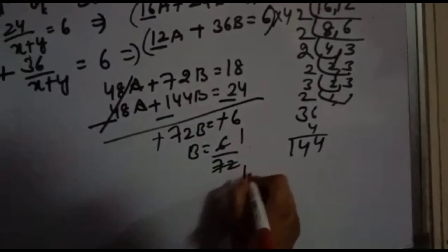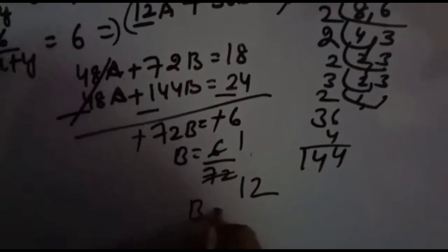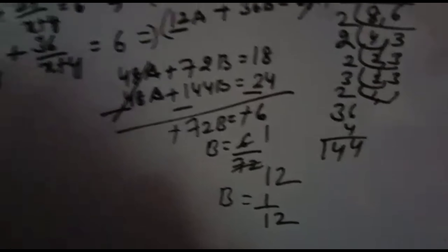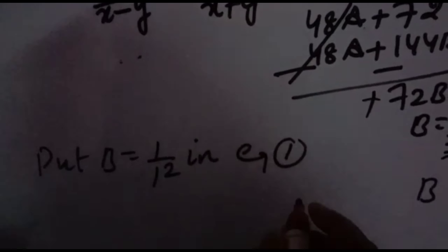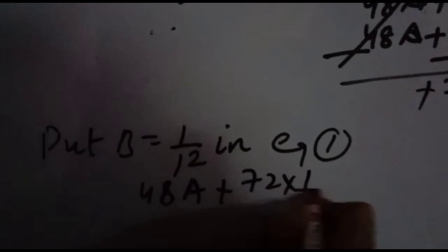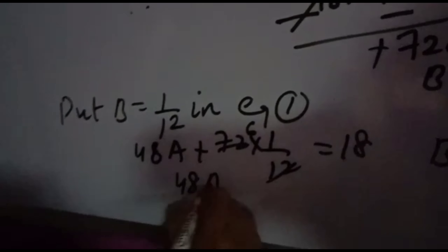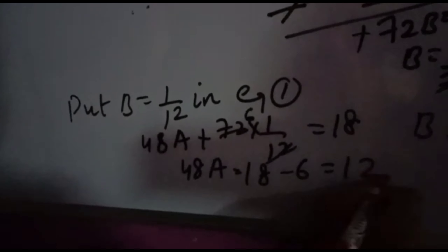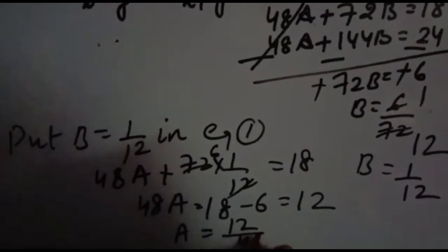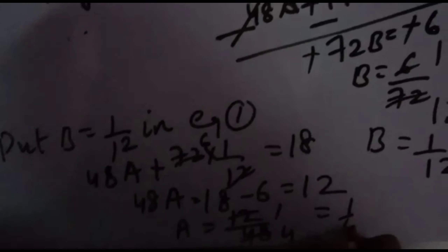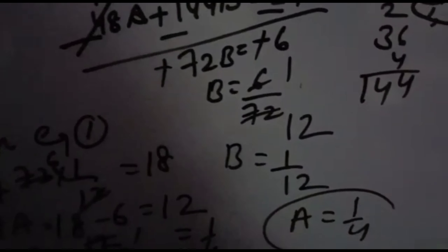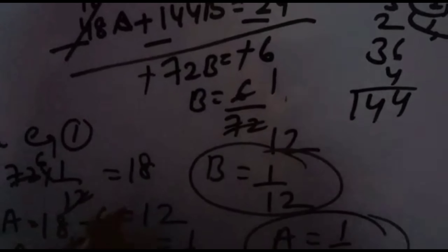Now substitute b equals 1 by 12 into equation 1: 48a plus 72 times (1/12) equals 18. Since 72 divided by 12 is 6, we get 48a plus 6 equals 18, so 48a equals 12, giving a equals 12 over 48, which is 1 over 4.